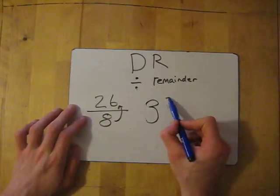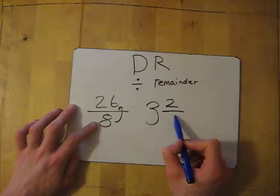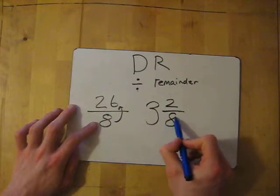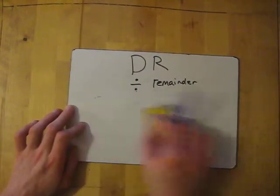The remainder is 2, so I put the 2 at the top of the fraction. The denominator stays the same, so it's 2 over 8. That's 3 and 2/8. Let's do one more.